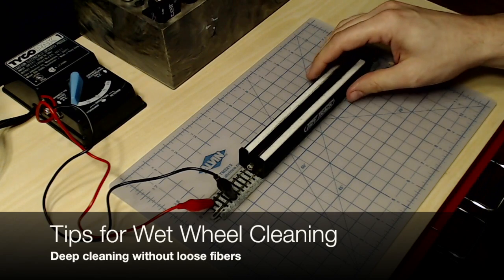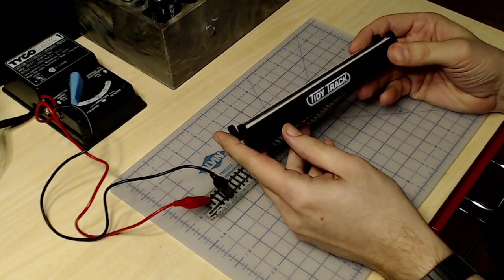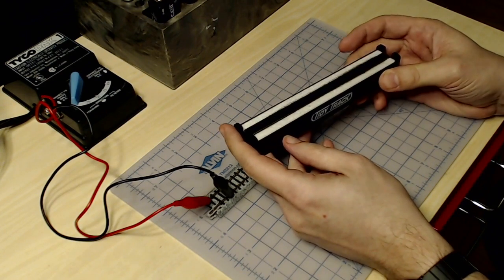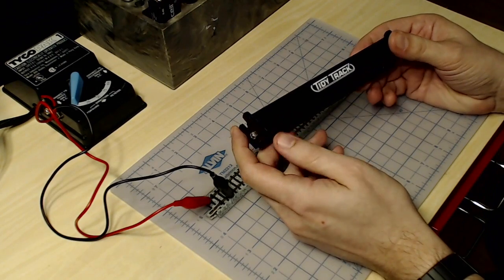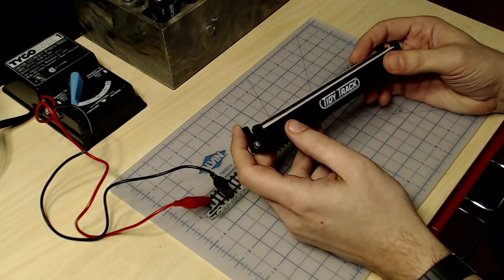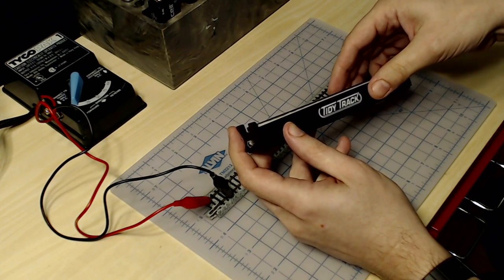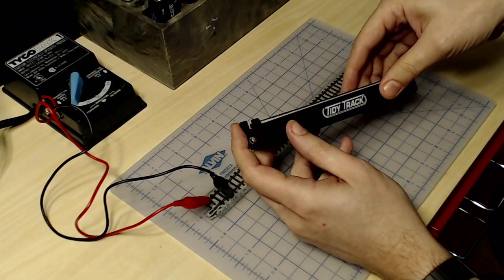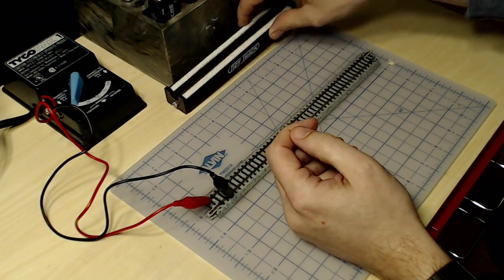In a previous video I looked at the Tidy Track Rotary Wheel Cleaner from Woodland Scenics and I like it very much. It's good for light cleanings and it's a dry system so I use this pretty frequently, but every month or so I like to give the wheels of a locomotive a deeper cleaning with alcohol, and I'll share a tip that I've learned to do that more safely for the locomotive.